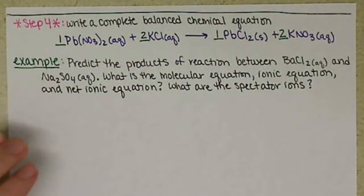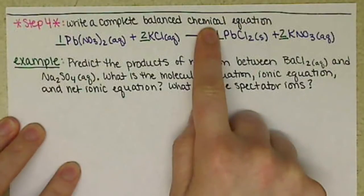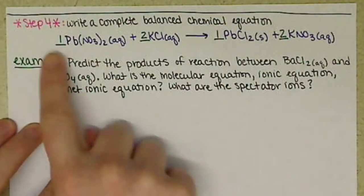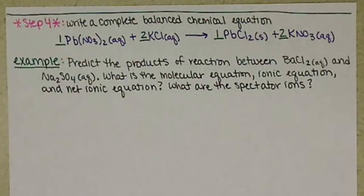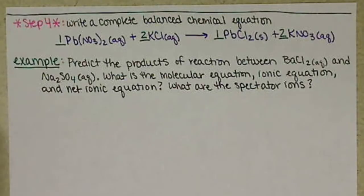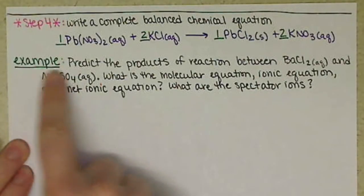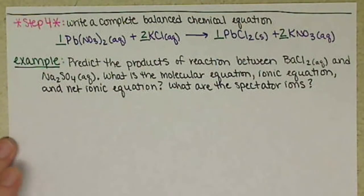In the previous video we had completed a chemical equation looking at the products that were formed. We're going to do a similar example here, going through some different ways of writing our equations that will tell us different pieces of information about the reaction. You'll want to write down this question.